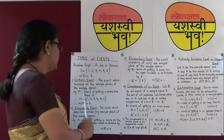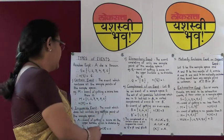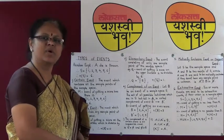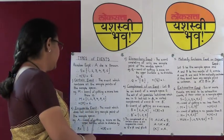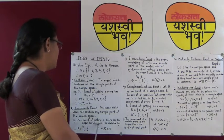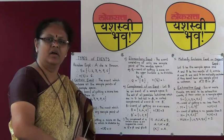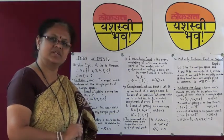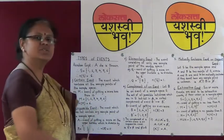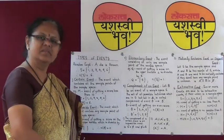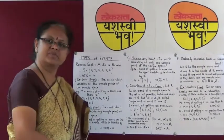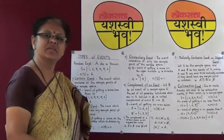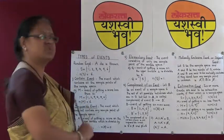The second type is impossible event. The event which does not contain any sample point of the sample space is termed as an impossible event. Considering event A as getting a score on the upper surface divisible by 7 — the number divisible by 7 starts from 7 itself — this event does not contain any sample point. Hence A equals the null set, the number of sample points is 0, and we say A is an impossible event.